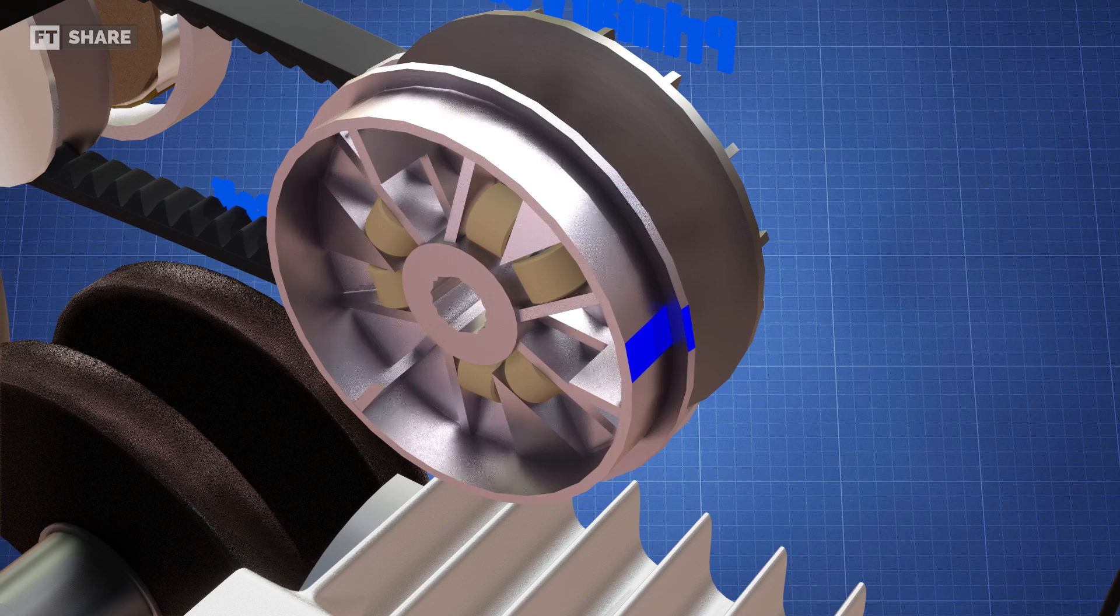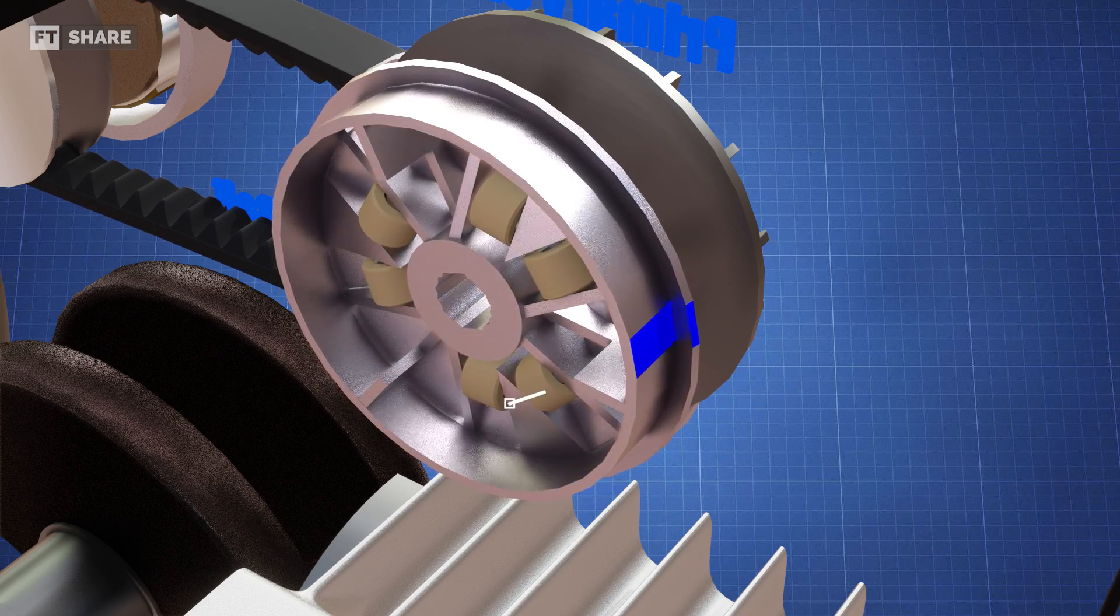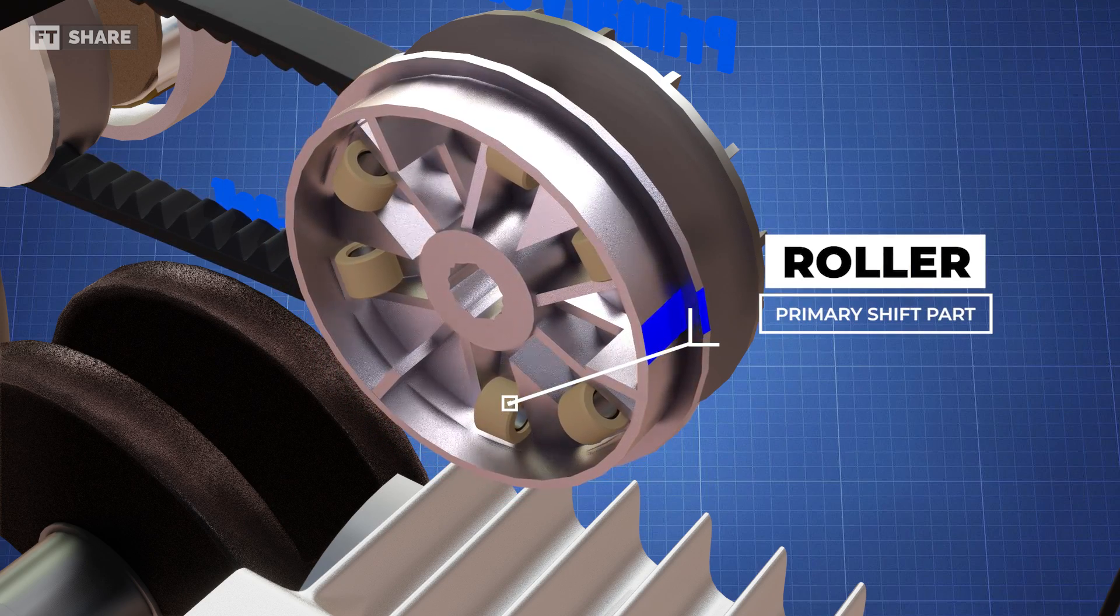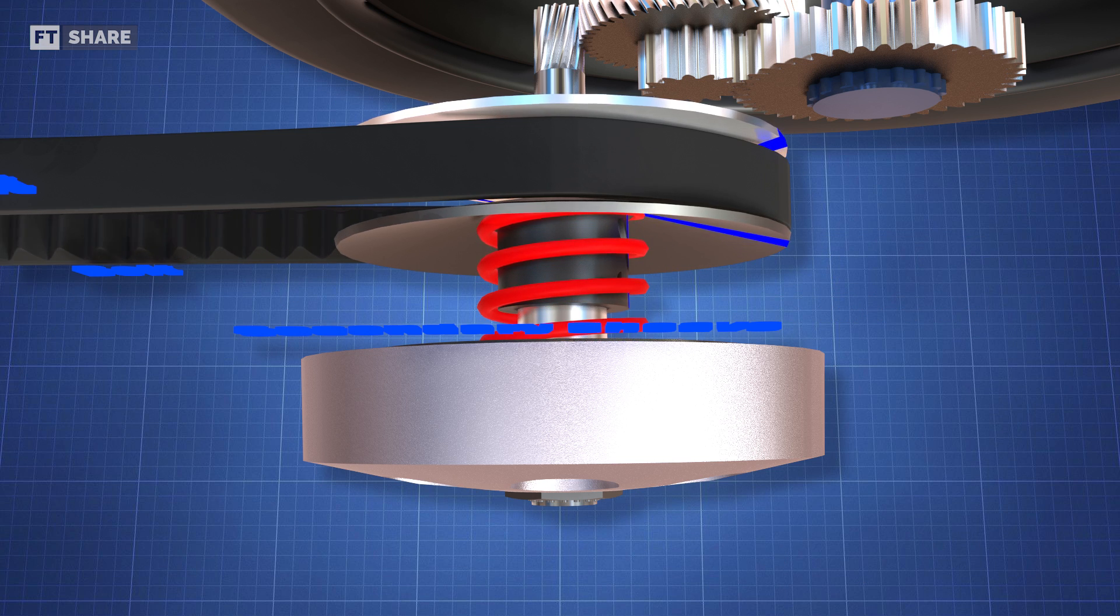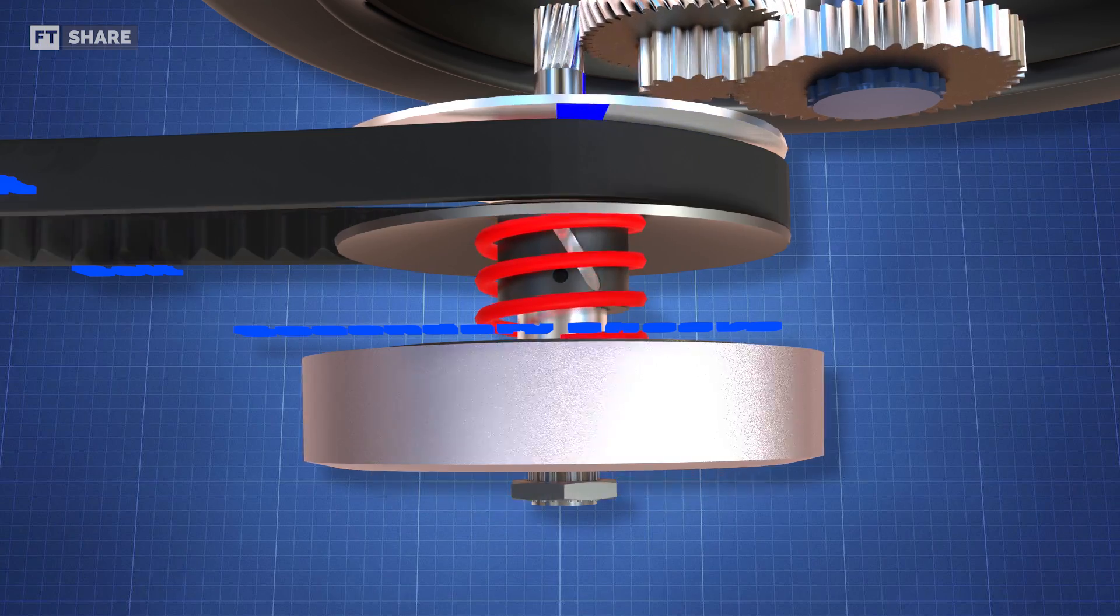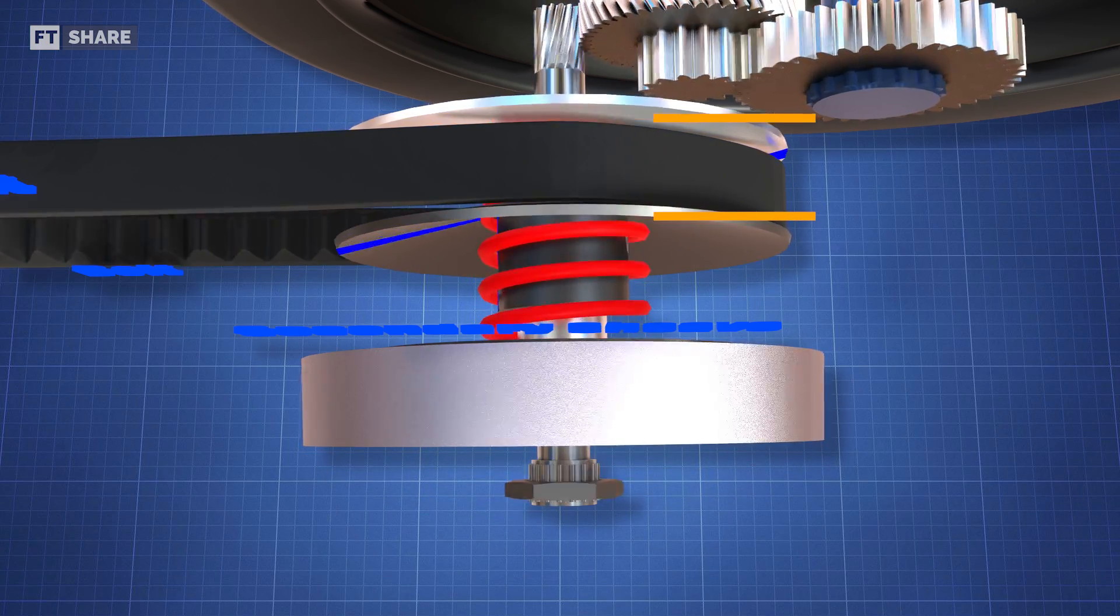First, let's take a closer look at the primary sheave. On the primary pulley, we'll see a set of weight rollers as shown here. When the engine is at low RPM, the pressure of the spring on the secondary pulley will keep the rollers in the center of the pulley.